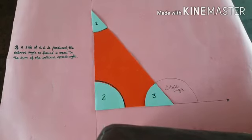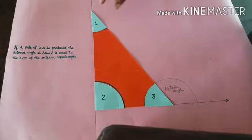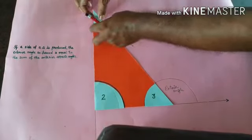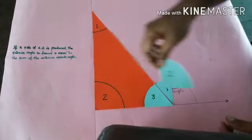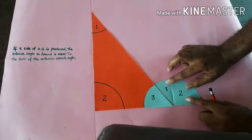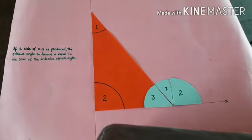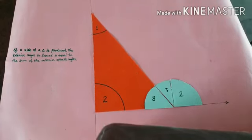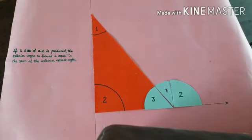The sum of the interior opposite angles is equal to the exterior angle. Angle 1 is placed here, and angle 2 is placed here. These two angles together are covering the exterior angle, showing that the exterior angle is equal to the sum of the interior opposite angles. Thanks, have a nice day.